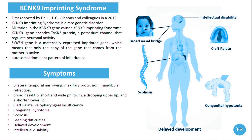KCNK9 Imprinting Syndrome is a rare genetic disorder caused by disruption in the KCNK9 gene, which is involved in encoding a potassium channel that helps to regulate neuronal activity. The disorder is characterized by several distinct clinical features related to both developmental and neurological issues.